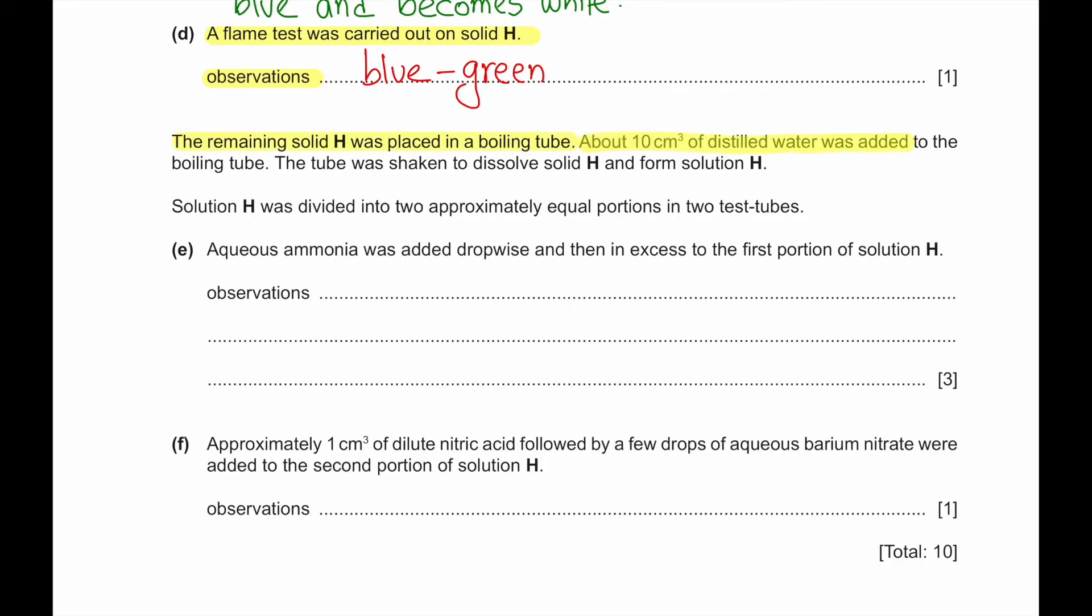The remaining solid H was placed in a boiling tube. About 10 cm³ of distilled water was added to the boiling tube. The tube was shaken to dissolve solid H and form solution H. Solution H was divided into two approximately equal portions in two test tubes. Part E. Aqueous ammonia was added dropwise in excess to the first portion of solid H. Observation. Solution H contains copper 2 plus ion. If we give it ammonia first few dropwise, so we will get light blue precipitate. But when we put in excess, then the light blue precipitate would dissolve and it would form a deep blue solution.